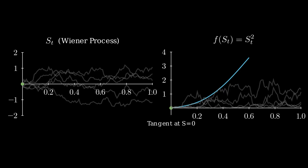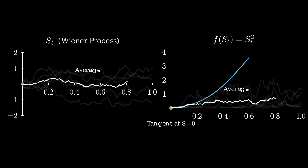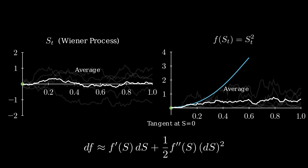With many paths, notice something surprising: the average of f(s) trends upward, even though s averages around 0. Why this drift? In classical calculus, we use the first derivative. But randomness adds this extra term: half times the second derivative times ds². For s squared, the second derivative is 2, and ds² grows with time, pushing the average up. That's the magic of Itô's lemma.